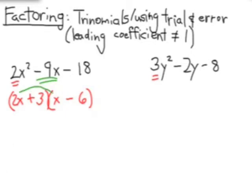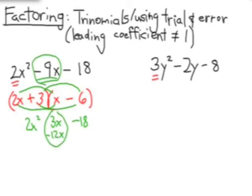2 times x, or 2x times x is 2x squared. 3 times negative 6, negative 18. So far so good. The inside numbers, 3 times x is a positive 3x. The outside numbers, 2x times negative 6, negative 12x. Does that give me the proper middle term? Yes. So there's my answer.